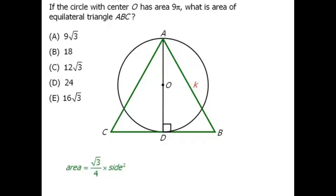We can do this by first using the information we have about the area of our circle. The area of any circle is equal to pi r squared. This particular circle has area 9 pi. So we now have an equation we can solve for r. Dividing both sides by pi and taking the square root gives us r equals 3. So the radius of this circle equals 3, which means the diameter must equal 6.